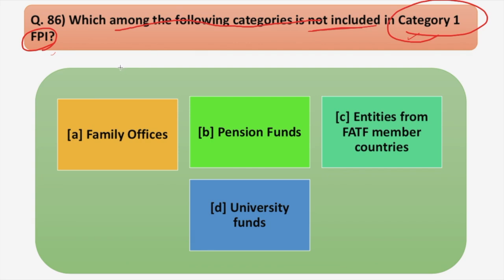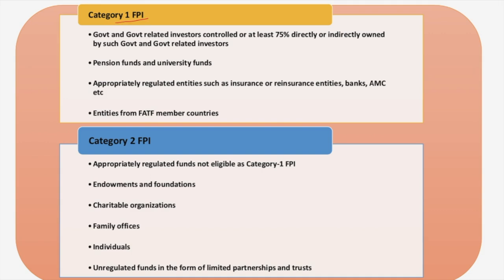For those who are new, welcome! We'll be covering Category 1 and Category 2 again in brief. Category 1 FPI includes government and government-related investors, pension funds and university funds, appropriately regulated entities such as insurance companies, banks, AMCs, and entities from FATF member countries.